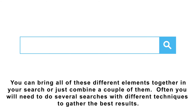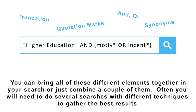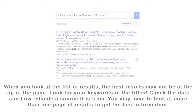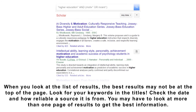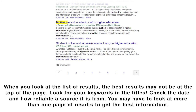You can bring all of these different elements together in your search, or just combine a couple of them. Often you'll need to do several searches with different techniques to gather the best results. The idea is not to create the perfect search, but to find the best results as quickly and as easily as possible. When you look at the list of results, the best results may not be at the top of the page. Look for your keywords in the titles, check the date and how reliable a source it is from. You may have to look at more than one page of results to get the best information.